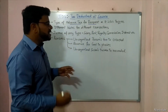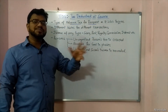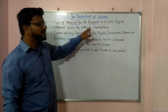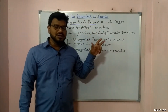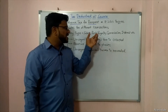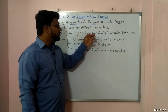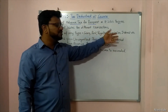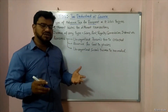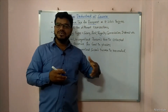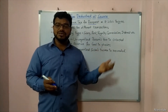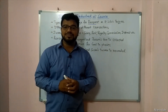Now, TDS — if you want to cut income, the percentage can vary by type of payment. There are different rates for different transactions. For salaries that is a different rate, for rent it is a different rate, for royalty, commission, and interest there are different rates.